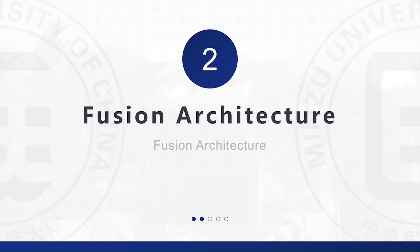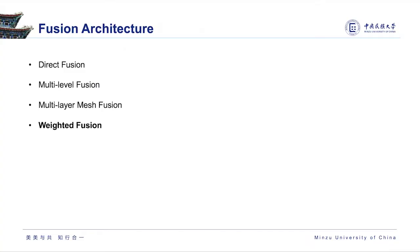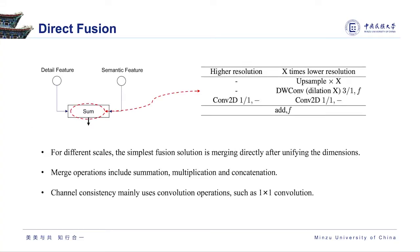We classify and review some effective fusion architectures and introduce some design ideas of typical architectures. For multi-scale fusion, the simplest way is to add or concatenate feature maps from two or multiple layers, with no explicit connections among each fusion branch. This is called direct fusion. Although a simple structure is not sufficient for high-accuracy segmentation, it has low computational cost.